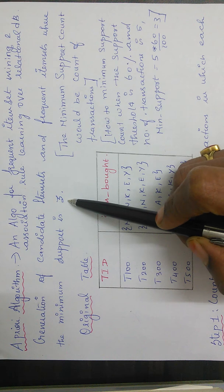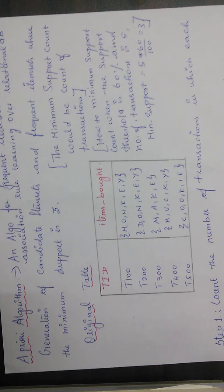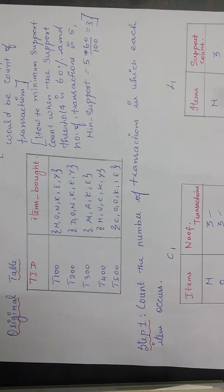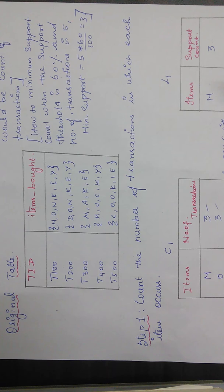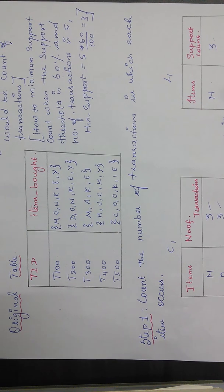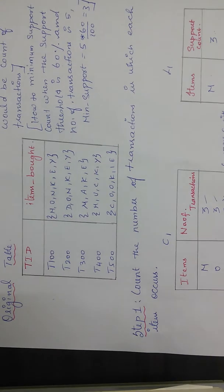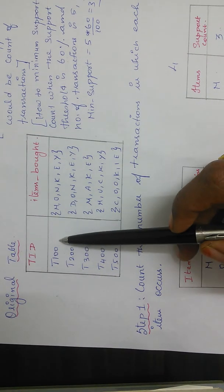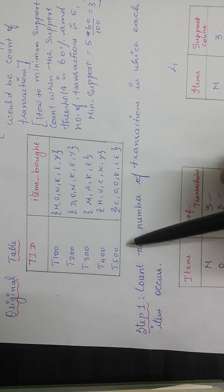Minimum support is very important in Apriori algorithm because with this minimum support count you scan your database and decide whether an item occurs frequently or not. If your frequent item set count is less than 3, you have to prune that item set. Now here we are going to look at the original table, which has 5 transactions: T100, T200, T300, T400, and T500.